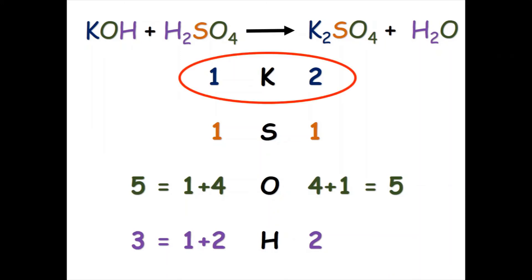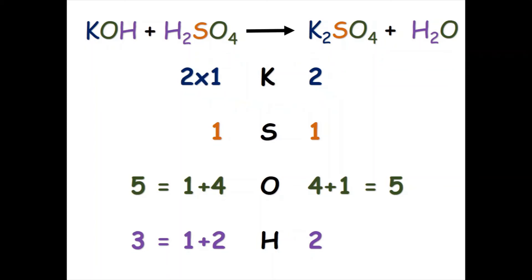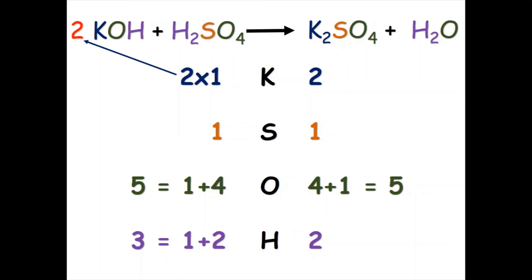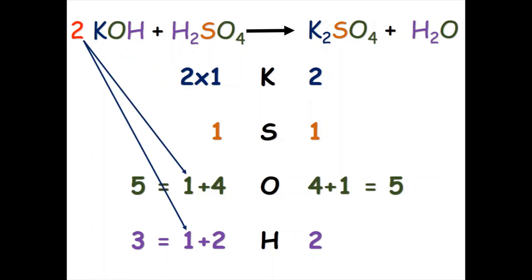Now I'm going to start balancing, beginning with potassium. We have two atoms on the right and one on the left, so we multiply the left by two — putting a 2 in front of KOH. Now we have two potassium hydroxide molecules and potassium is balanced. However, that 2 also affects the oxygen and hydrogen counts from KOH, so the one we had for each of those now becomes two.